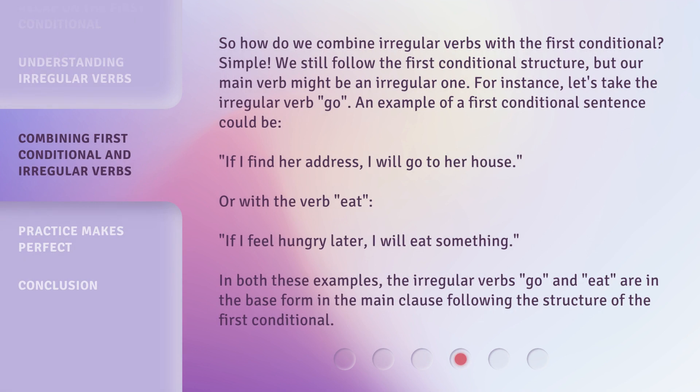So, how do we combine irregular verbs with the First Conditional? Simple. We still follow the First Conditional structure, but our main verb might be an irregular one. For instance, let's take the irregular verb 'go'. An example of a First Conditional sentence could be: if I find her address, I will go to her house. Or with the verb 'eat': if I feel hungry later, I will eat something. In both these examples, the irregular verbs 'go' and 'eat' are in the base form in the main clause, following the structure of the First Conditional.